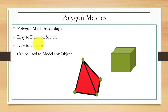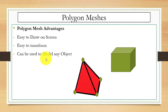The advantages of polygon mesh are: it is easy to draw on the computer screen, easy to transform — we can apply any transformation operation on it easily — and we can use it to model any object. With the help of polygon mesh you can do modeling and model any object.